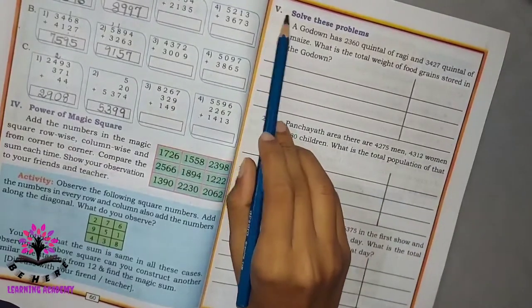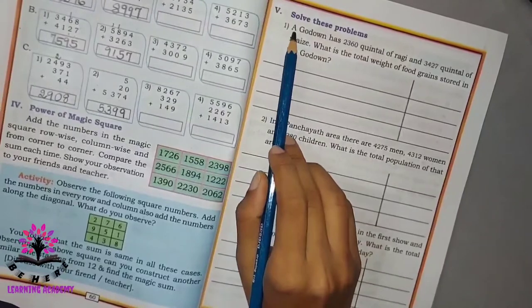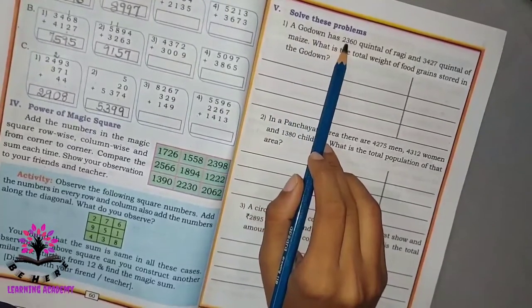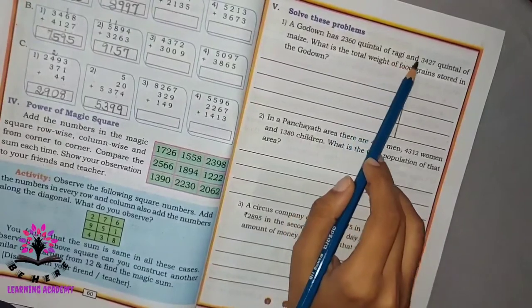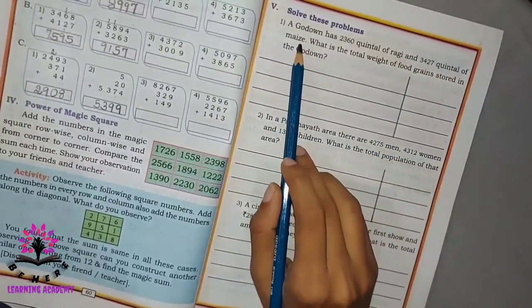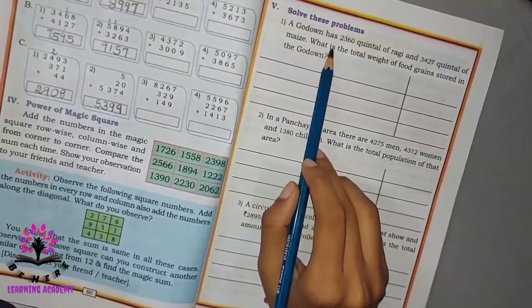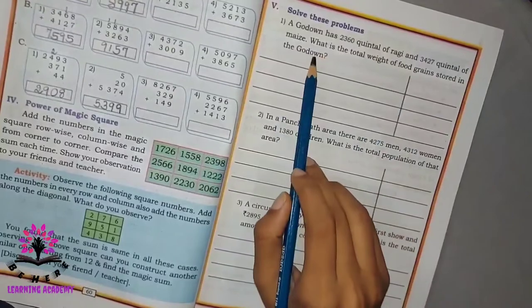Hello students, let us solve Exercise 3.1 Roman numeral 5. Question A: A godown has 2360 quintal of ragi and 3427 quintal of maize. What is the total weight of food grains stored in the godown?